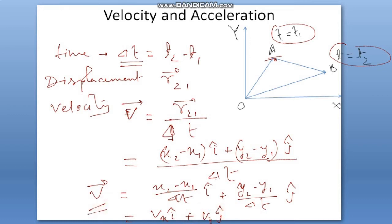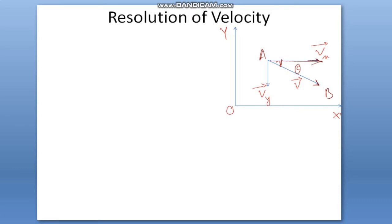Similarly, acceleration: change in velocity divided by time interval. If initial velocity is vᵢ and final velocity is vf, then acceleration equals (vf - vᵢ) divided by time interval. Velocity direction is the same as displacement direction, from A to B.